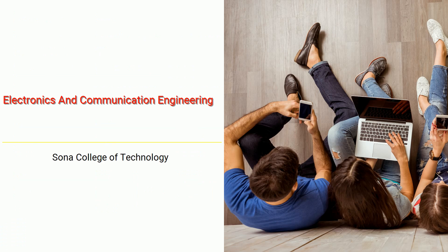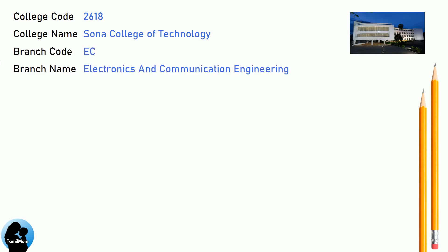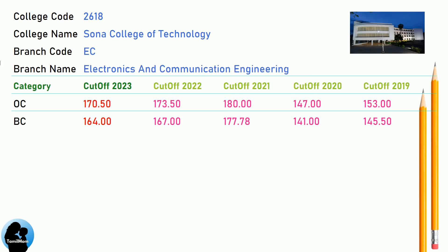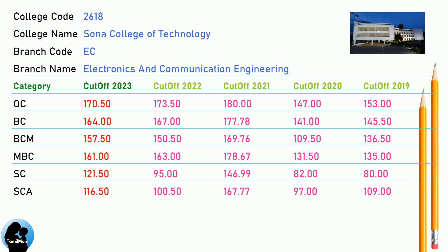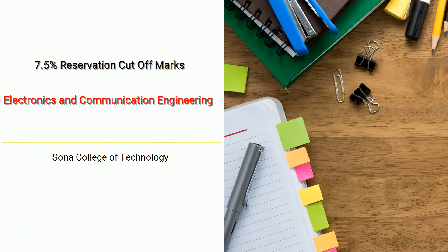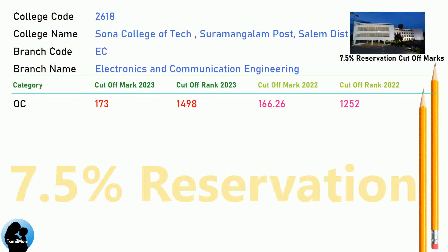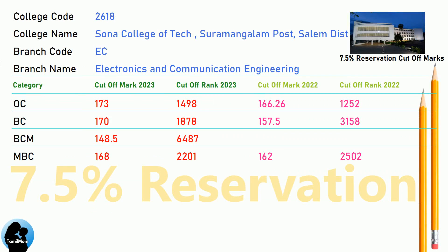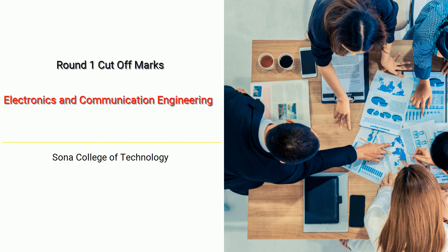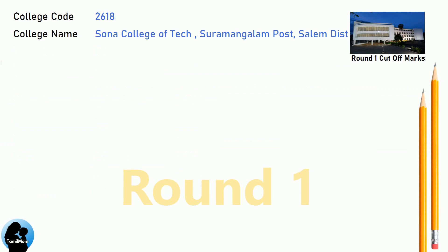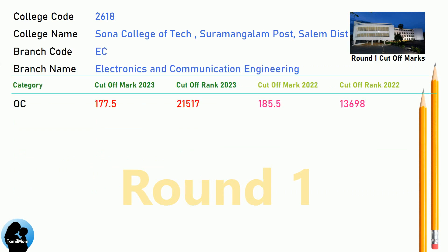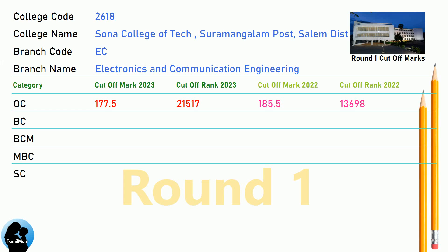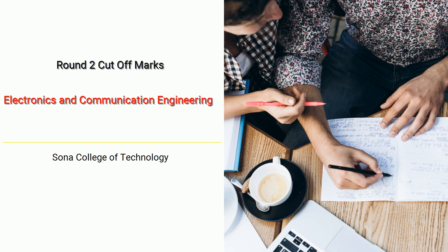DNA cut-off for Sona College of Technology in Electronics and Communication Engineering. DNA 7.5 Reservation cut-off for Sona College of Technology in Electronics and Communication Engineering. DNA Round 1 cut-off for Sona College of Technology in Electronics and Communication Engineering. DNA Round 2 cut-off for Sona College of Technology in Electronics and Communication Engineering.